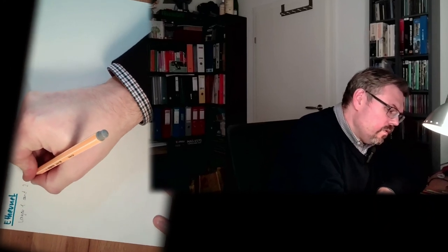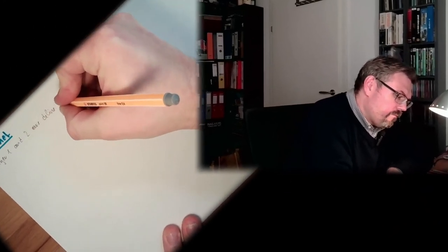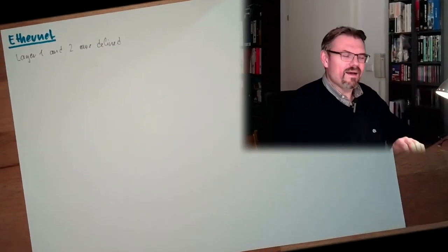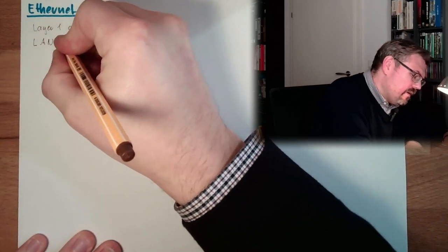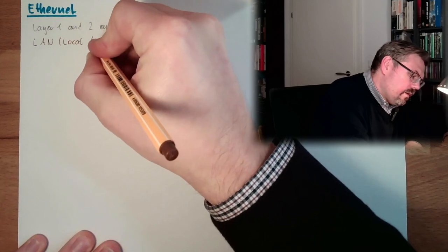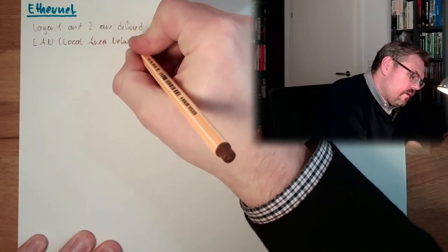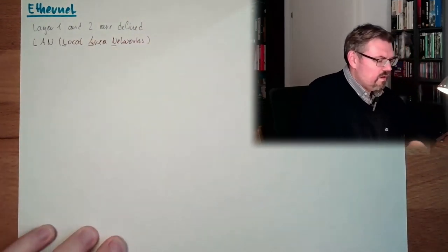Hello and welcome to a new video about networks. This time we are talking about Ethernet, a widely used implementation of some layers. Basically, Ethernet is defining layer 1 and 2 — the physical layer and the data link layer. Ethernet was originally thought to be used in so-called LAN — Local Area Networks. This was the root of Ethernet.